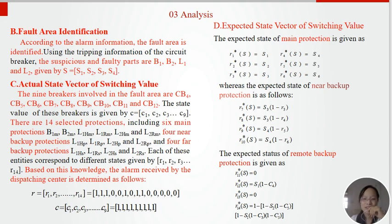Actual state vector of switching value: The 9 breakers involved in the fault areas are CB4 to CB12. There are 14 selected protections: 6 main protections, 4 near-backup protections, and 4 far-backup protections. Based on this knowledge, the alarm received by the dispatching center is determined as follows. Expected state vector of switching value: The expected state of main protection is given as shown. The expected state of near-backup protection is as follows. The expected state of remote-backup protection is given as shown.